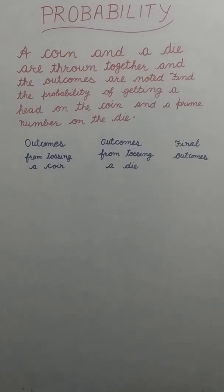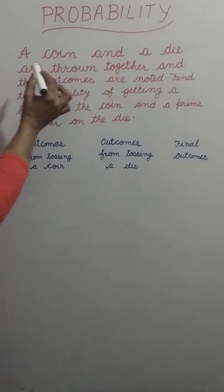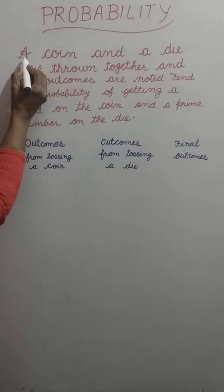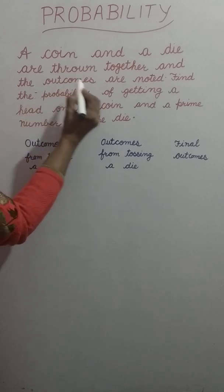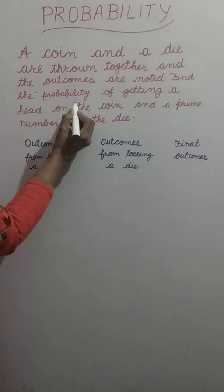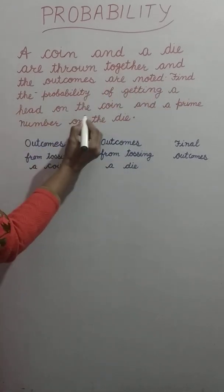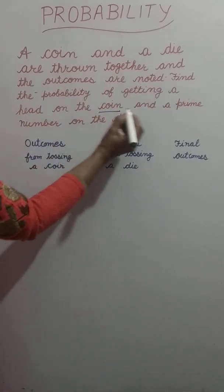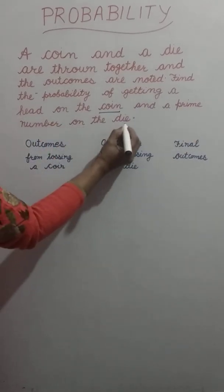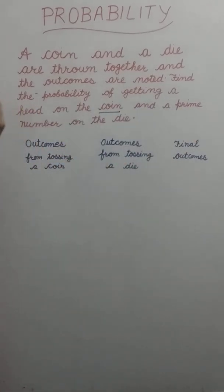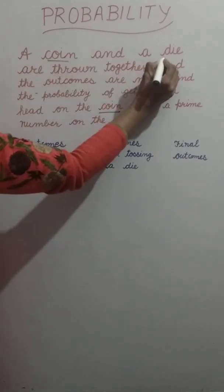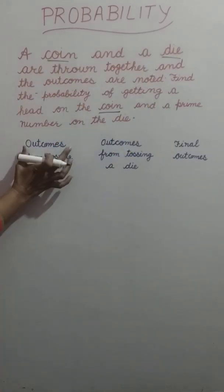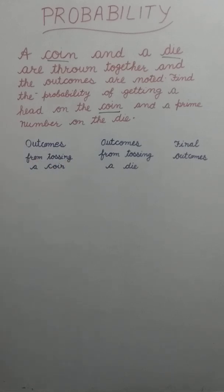Hello dear students, welcome to my channel with another video on the topic of probability. Our question is: a coin and a die are thrown together and the outcomes are noted. Find the probability of getting a head on the coin and a prime number on the die.